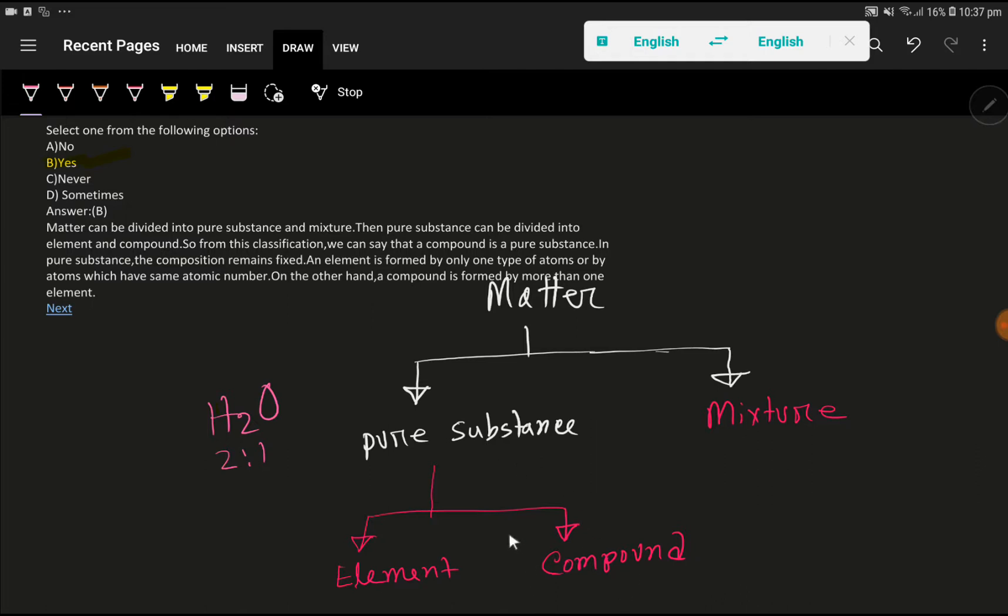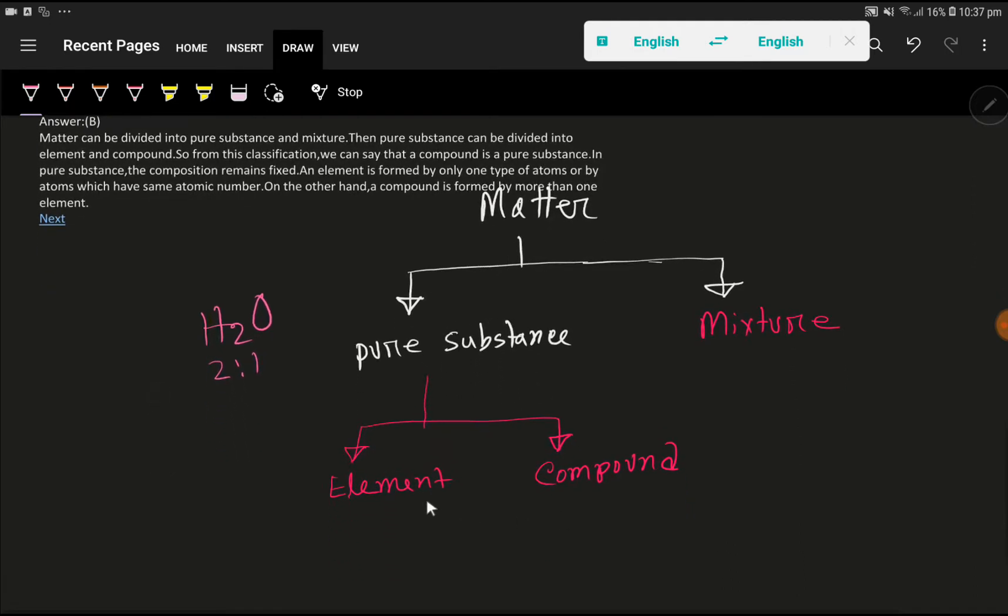A compound is a subdivision of pure substance, so we can say that compound is a pure substance. In pure substance the composition remains fixed. Look, can you tell me what is the element and what is compound?